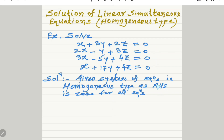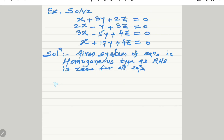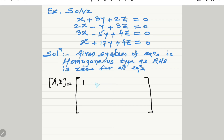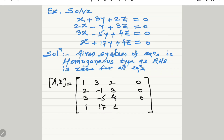We have four equations in three unknowns: x, y, and z. As the right-hand side of each equation equals zero, the type is homogeneous. To solve it, we write the augmented matrix — a combination of matrix A and matrix D. Matrix A contains the coefficients: first row 1, 3, 2, 0; second row 2, -1, 3, 0; third row 3, -5, 4, 0; last row 1, 17, 4, 0. We separate the two parts by a line.